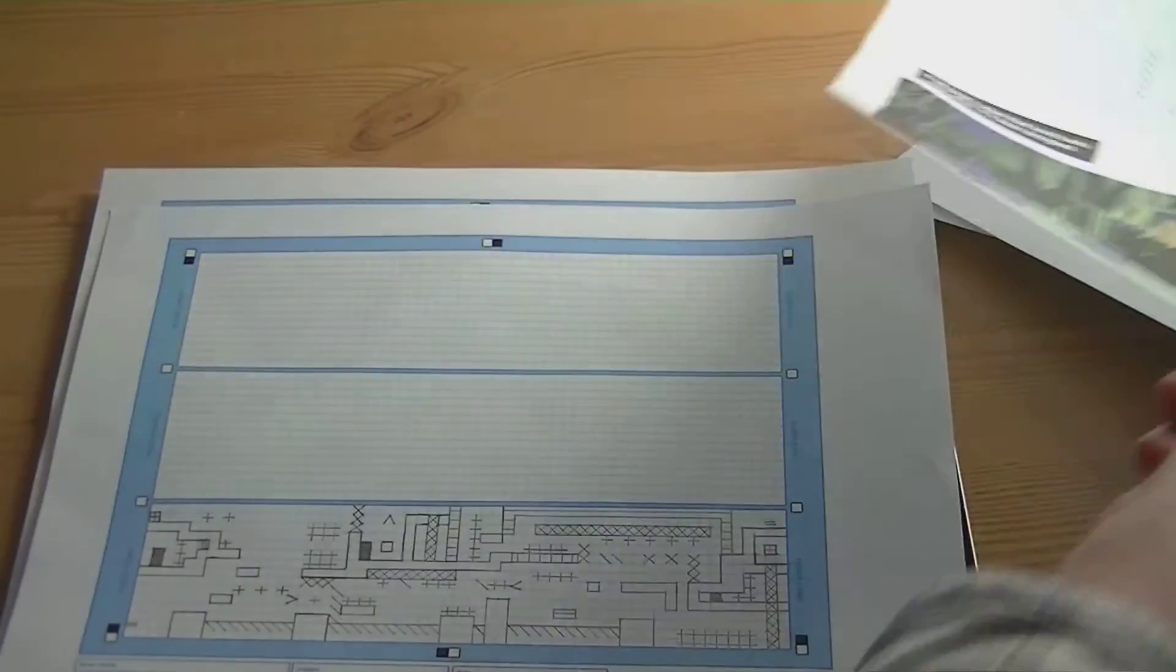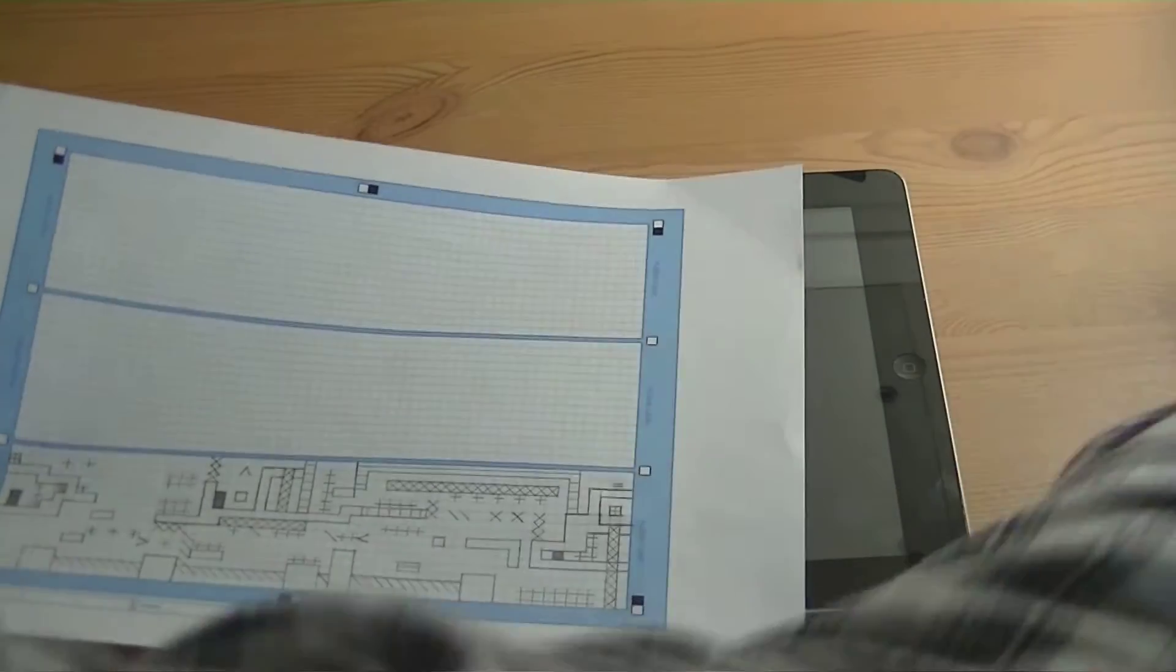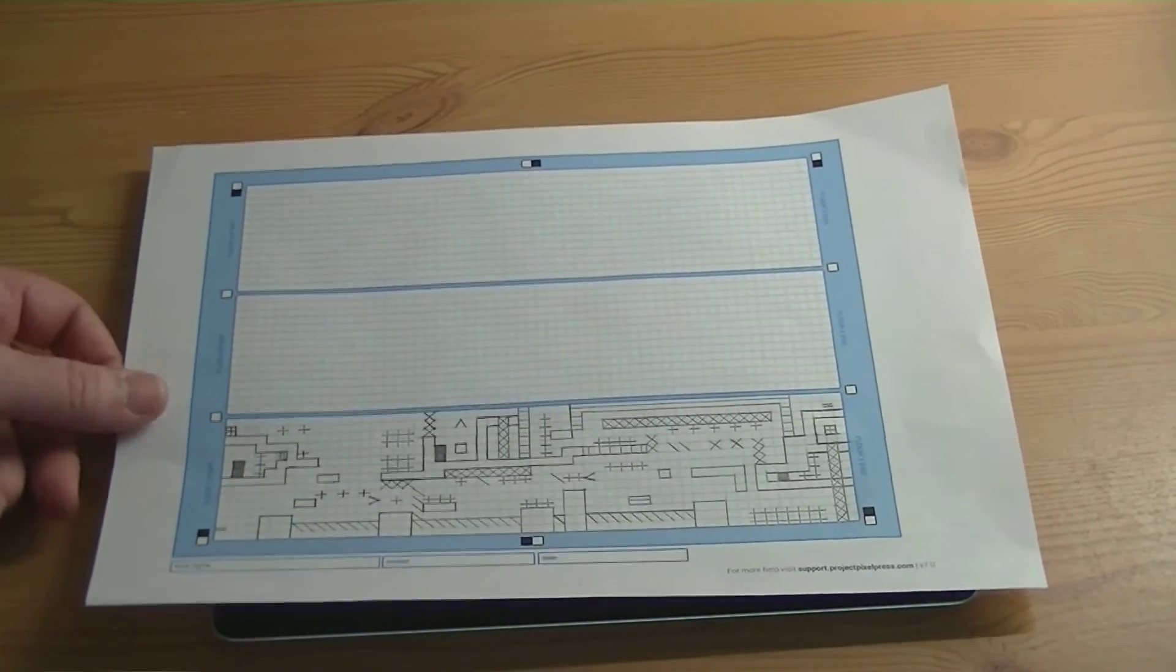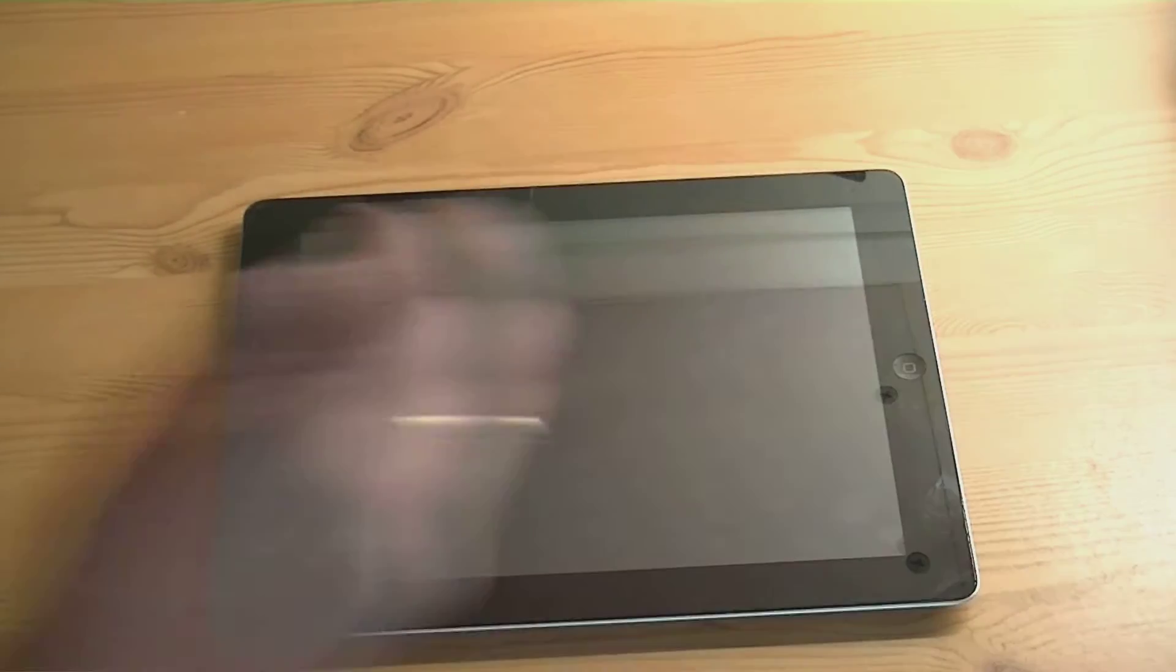So this here is one I did. I just did one floor just to do this video here and let you see what's going on. Basically what you'll do is get a blank grid like this.